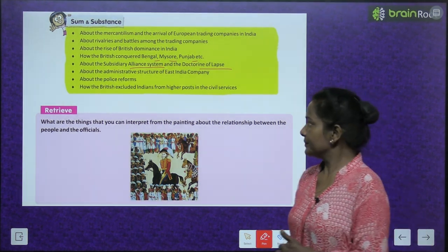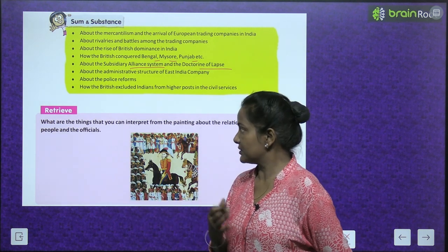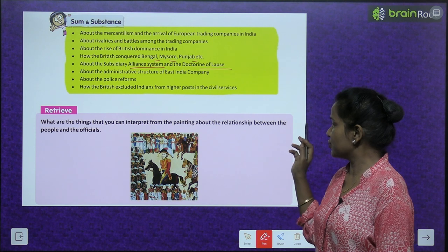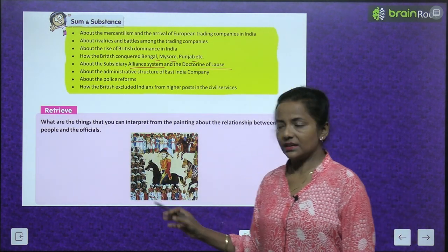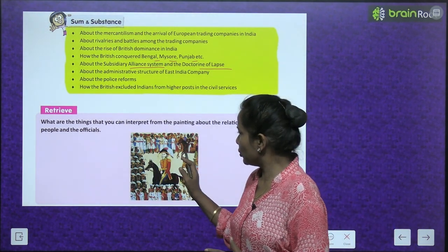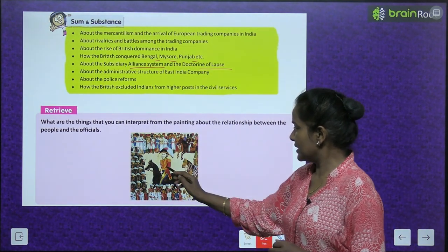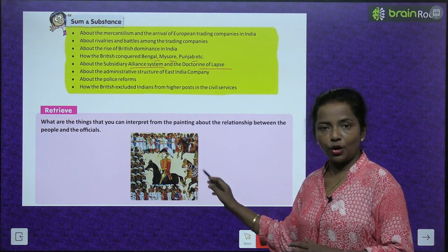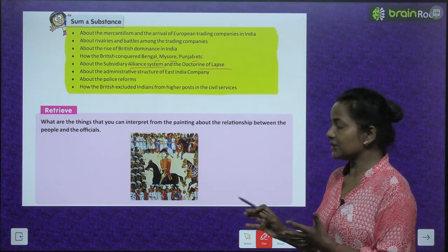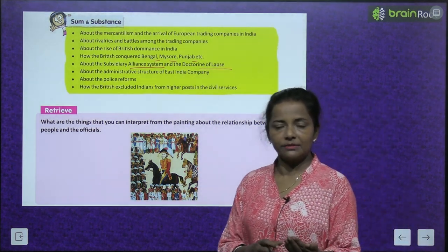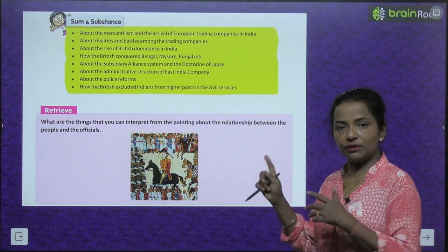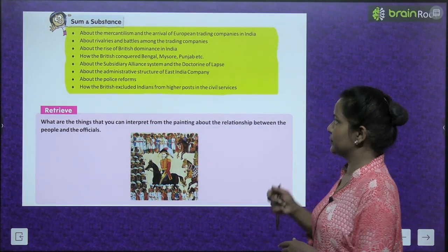Now, retrieve — let's find out what things you can interpret from the painting about the relationship between the people and the officials. There are some officials here; a few officials are on horseback, some are standing. We will come to know about this relationship when we read the chapter. So let's start.